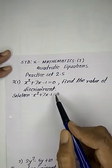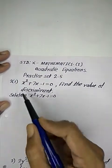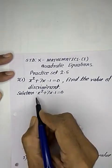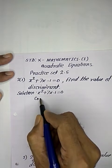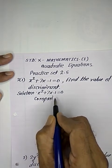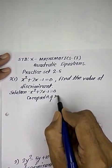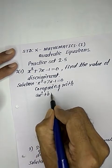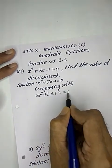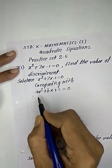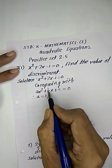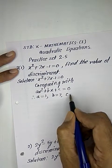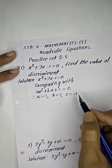The question asks to find the value of the discriminant. The solution is given. We need to compare this with the standard form. Comparing with ax² + bx + c = 0, if we compare, the value of a is 1, b is equal to 7, and c is equal to -1.